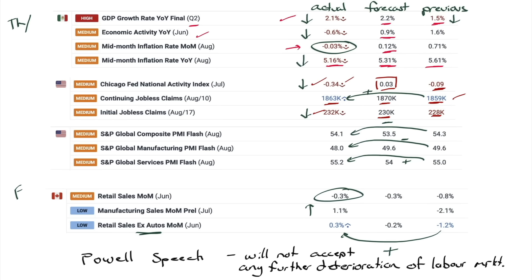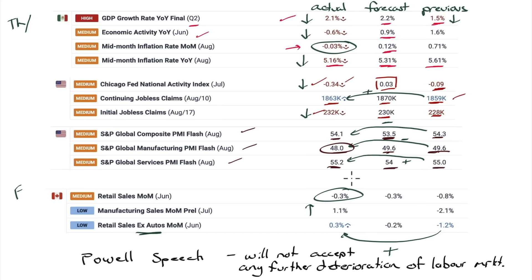S&P composite PMI: the PMIs are the king of the hill when it comes to these indexes. It went from 54.3 to 54.1 — a decrease, but it did beat the 53.5 expectation. That's the composite; it's broken down into manufacturing and services. Manufacturing came in lower than both last month and the expectation, while services came in higher than both last month and the expectation — which has been a trend for a couple of years now.